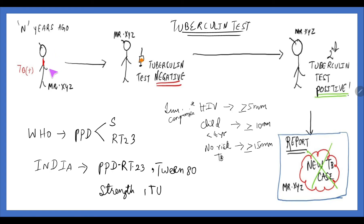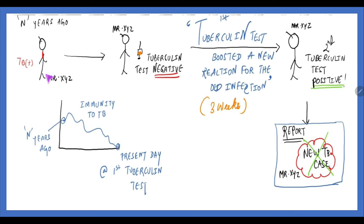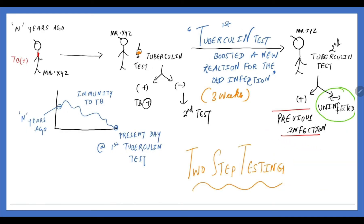A person previously diagnosed with TB was treated long ago. After some years, his first tuberculin test is negative. On a second tuberculin test, he tests positive. This is not a new TB case — what actually happened is that immunity to TB had waned, and when given a second tuberculin test after three weeks interval, the tuberculin test boosted a reaction to the old infection. This is called the booster effect — it is a previous infection, not a new TB case.